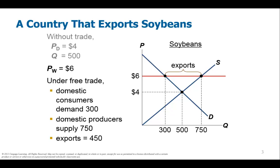Here we have an example of a market, and our market is soybeans. If this country — country X — chooses not to trade, the domestic market for soybeans is represented as such. Without trade, the market price would be $4, and 500 units would be sold.